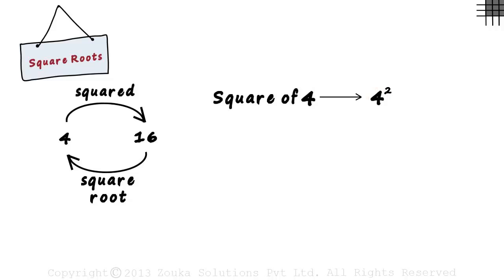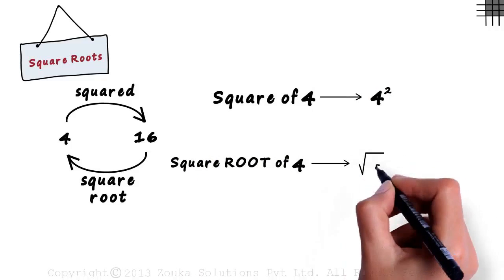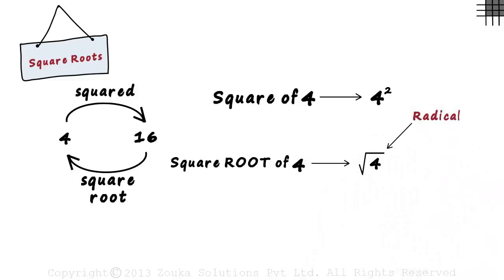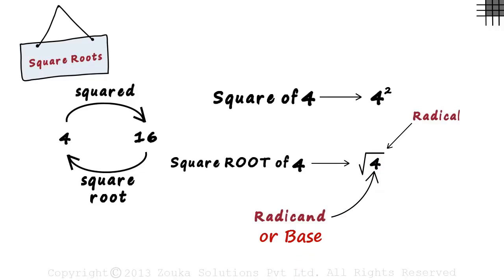Now how do we represent the square root of 4? Well, this is how we write it. This symbol is called the radical or the square root, and the number inside the symbol is called the radicand or the base. That's the first thing we learned: how to represent a square root.